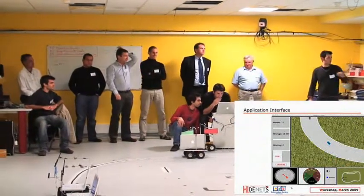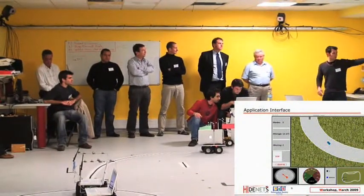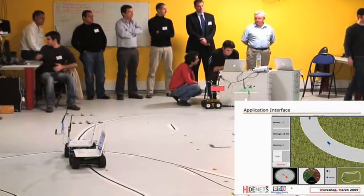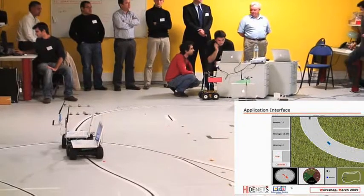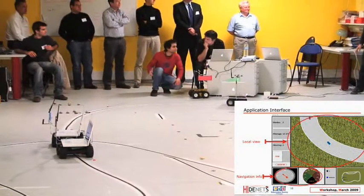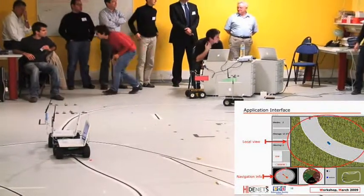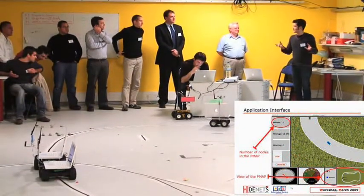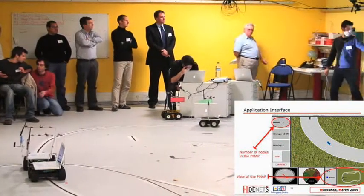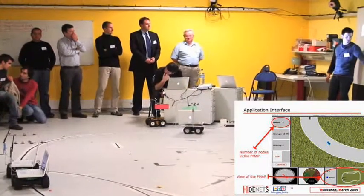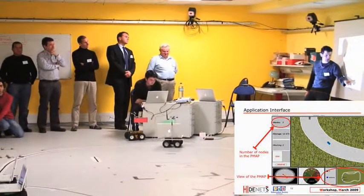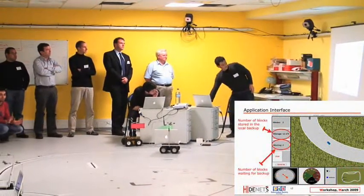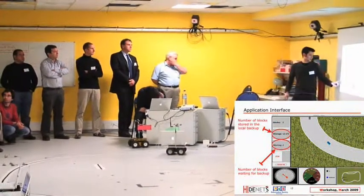Let me show you the application interface — that's what's going to be projected. You'll have one window like this for each car: the green, the blue, and the black car. This is currently the blue one, which we called Antonio. Antonio has a view of its vicinity and some navigational information — a compass and a speedometer. There's information about the proximity map of the middleware, and Antonio knows about the black node. This is the number of nodes in the proximity map, and here you can see information about the cooperative backup.